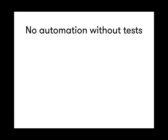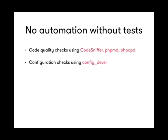Now a little about tests — there's no automation without tests. What kind of tests are we doing? We do things like code sniffer, PHP mess detection, and code beautifier that run when the developer is working on the code. Then we do configuration checks using ConfigDev, making sure our configuration is consistent with what the module describes it should be. Then we do a distribution installation test using Phing Build, making sure our campaign profile distribution actually installs without errors.